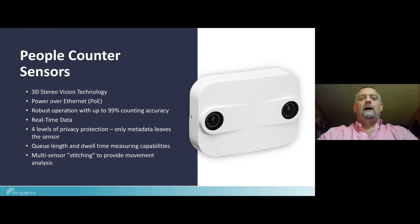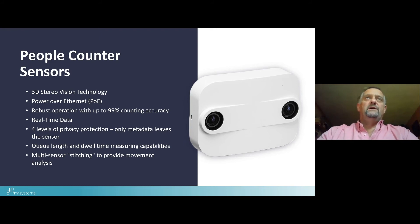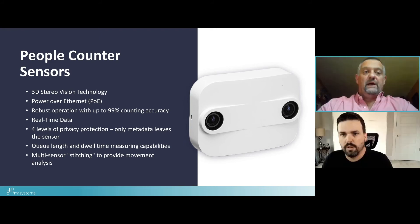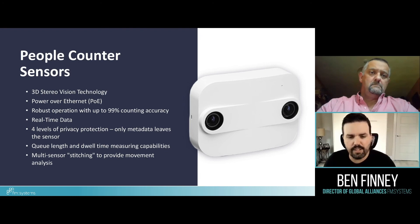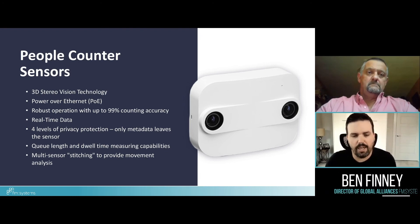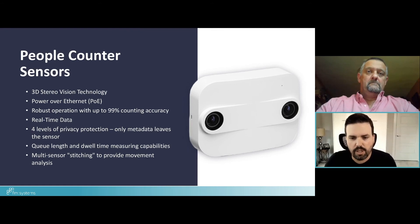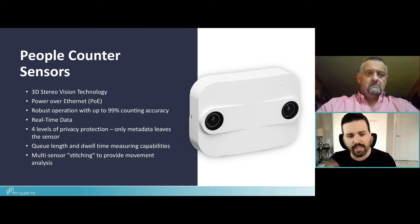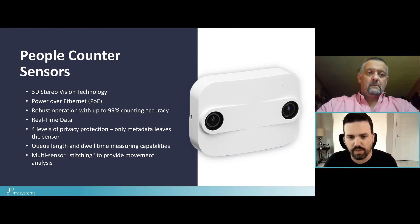We're starting to see a lot more uses for this sensor type in corporate real estate. Since it covers ingress and egress, it's probably not uncommon for companies to use a mix of sensors — people counters at entry points and other sensors once people are inside to understand where they're going. Is that a safe assumption?